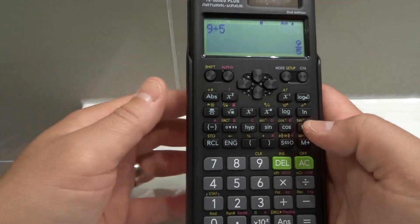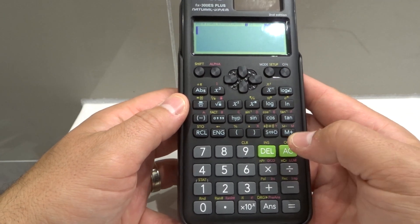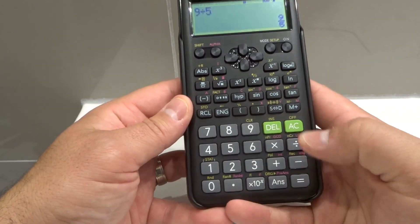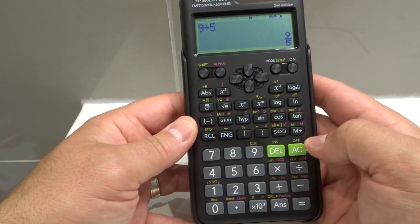But if you want to do it on a more permanent basis, let's clear this off. If I do right now 9 divided by 5 equals, it's going to give me 9 fifths again. So let's clear it off.